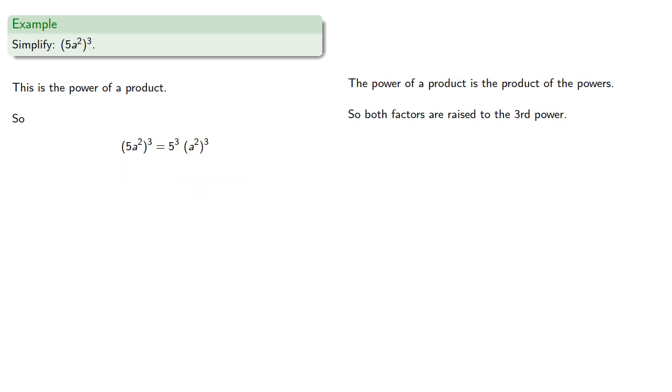Now we could evaluate the five to the third, but let's focus on this a to the second to the third. This is a power raised to a power, so we multiply the exponents. Two times three is six, and we could also compute five to the third if we want, or not.